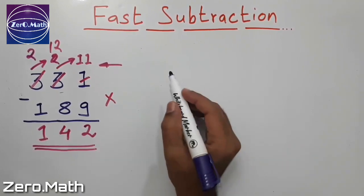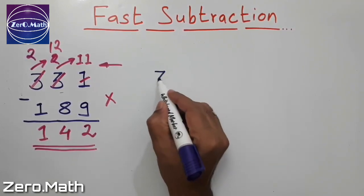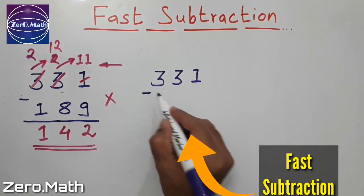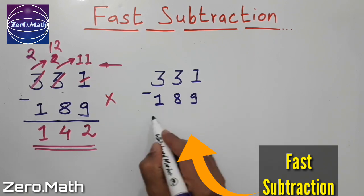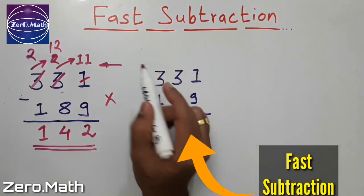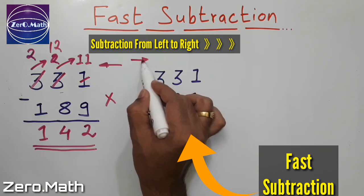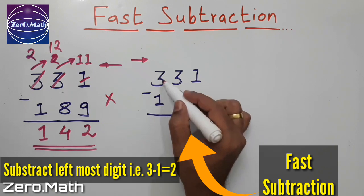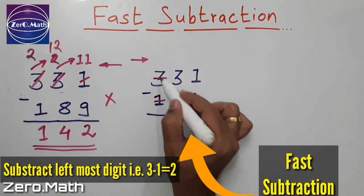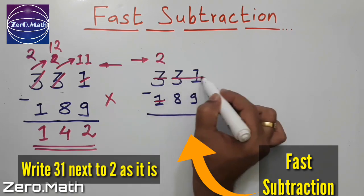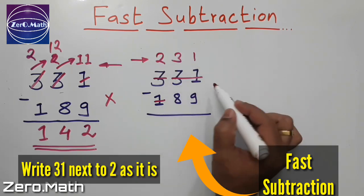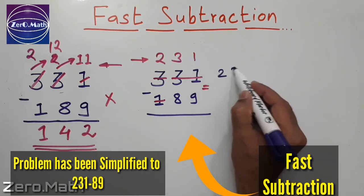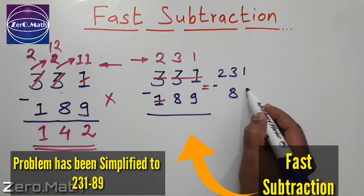Let's try to perform the same subtraction using the fast subtraction trick. I will rewrite my numbers again: 331 minus 189. In fast subtraction we always perform the subtraction from left to right. I will take my leftmost digit, that is 3 and 1. Subtract 1 from 3 so it will become 2. 3 minus 1 is 2 and write this 31 as it is. Now I have simplified my subtraction to 231 minus 89.